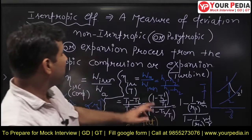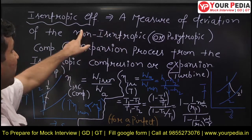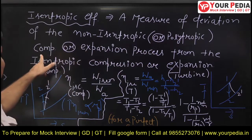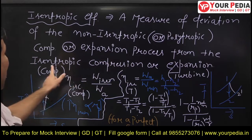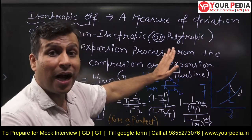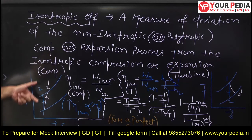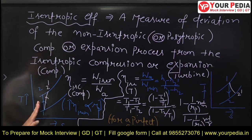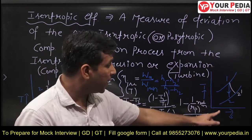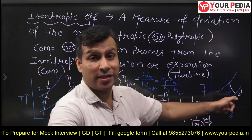Let me first give you a brief idea about isentropic efficiency. Isentropic efficiency is a measure of the deviation of a non-isentropic or polytropic compression or expansion from the isentropic compression or expansion process. For isentropic compression: 1 to 2 is isentropic compression and 1 to 2-dash is non-isentropic. Similarly, for a turbine, 1 to 2 is isentropic expansion and 1 to 2-dash is non-isentropic expansion.